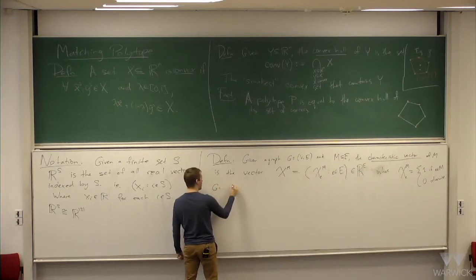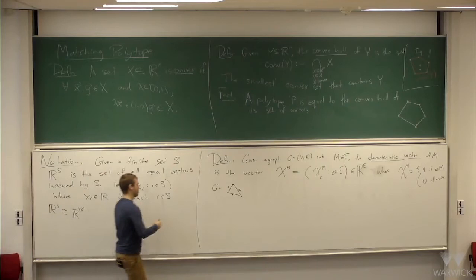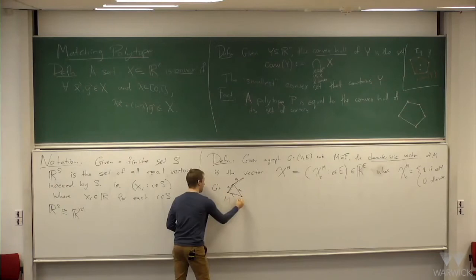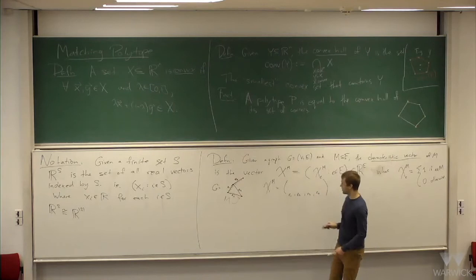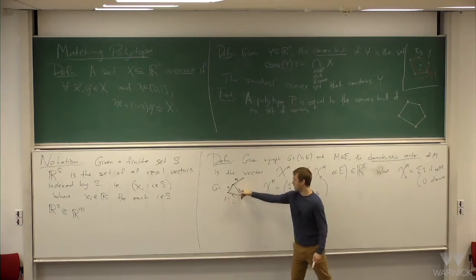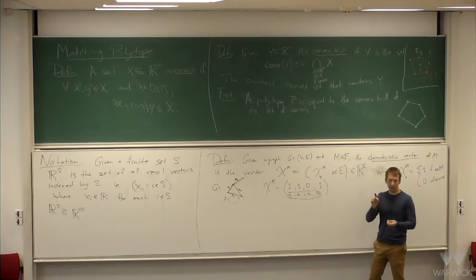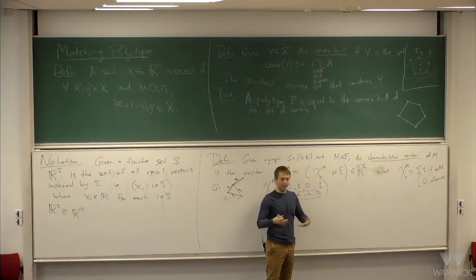For example, if G is a graph with edges e1, e2, e3, e4, and m is the set of orange edges, then if you think of this as a vector where the first coordinate corresponds to e1, you have a 1 for e1 and e2 because they're in m, a 0 for e3 because it's not in m, and a 1 for e4. Of course, there's no natural ordering on the edges of a graph, so these can come in any order.